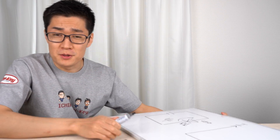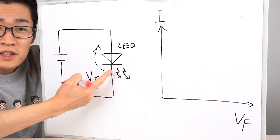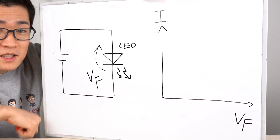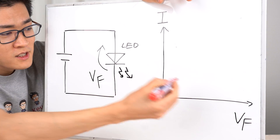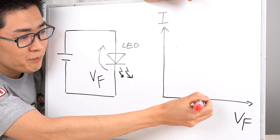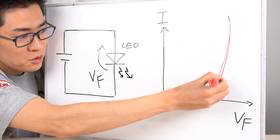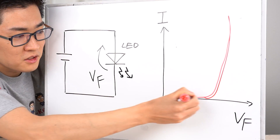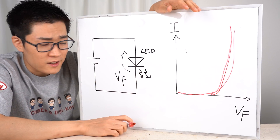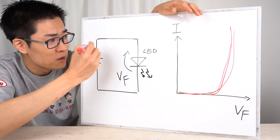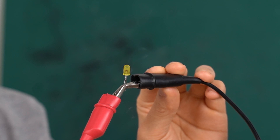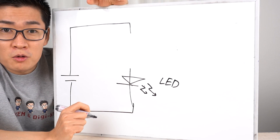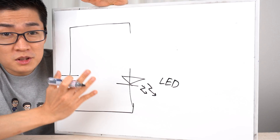I made a terrible mistake. I connected the LED and power supply directly. However, the current that flows through an LED increases rapidly when a voltage reaches a certain level — that's the current-voltage characteristic of an LED. This means that if you connect the power supply directly in series with an LED, too much current will flow and the LED will heat up and eventually burn. So what can we do to light up an LED without damaging it?